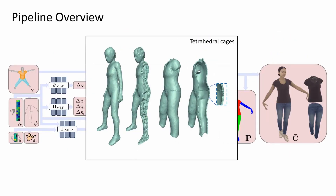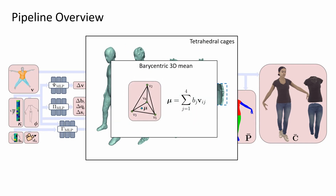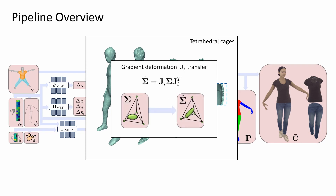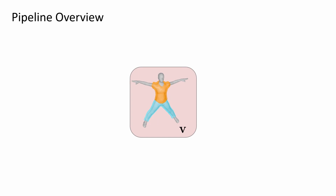We use tetrahedral cages for 3D Gaussian deformations. Each Gaussian's 3D mean mu is a linear combination of tetrahedron vertices and barycentric coordinates. We additionally incorporate the scaling and rotation of a tetrahedron's deformation gradient J into the Gaussian covariance matrix sigma, modeling phenomena like slack stretching.